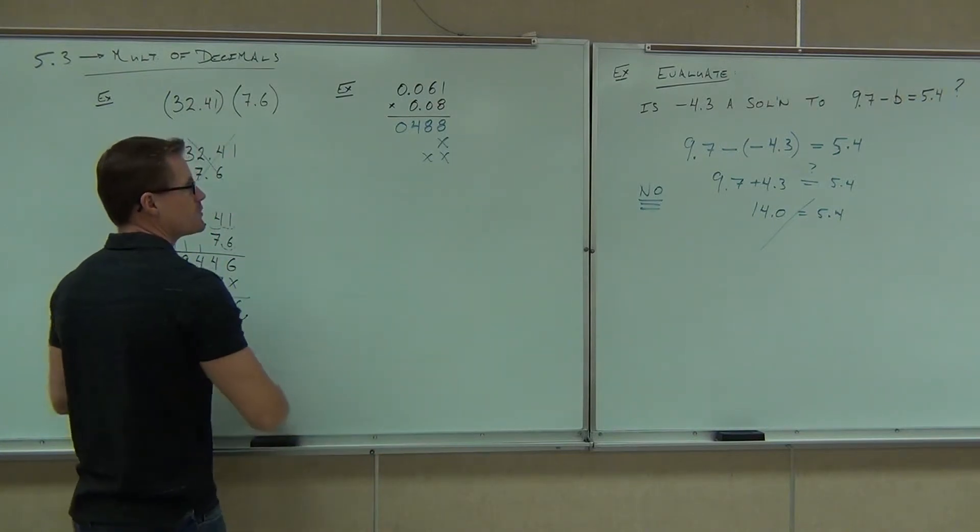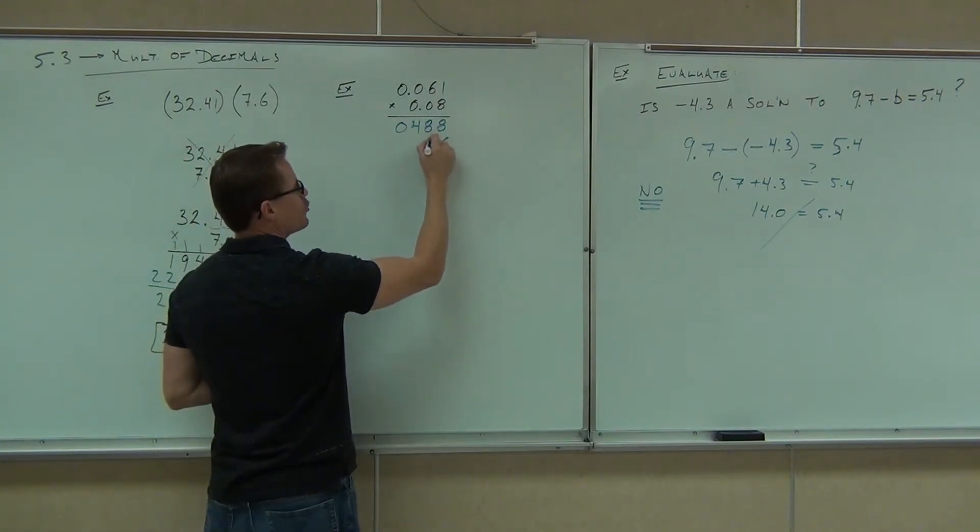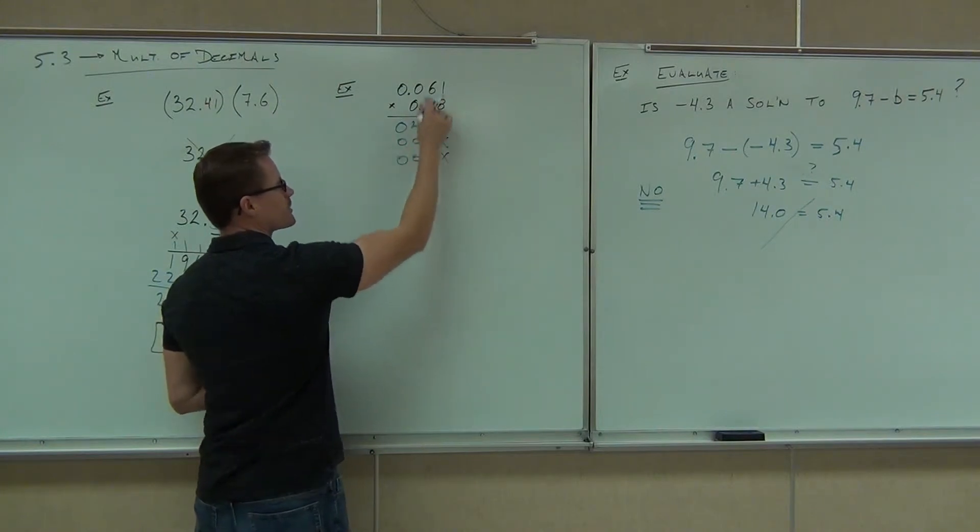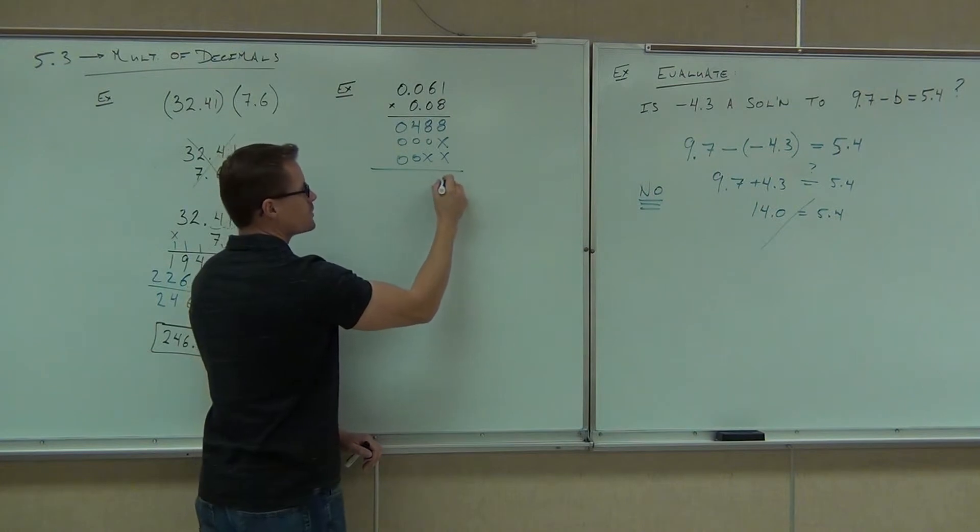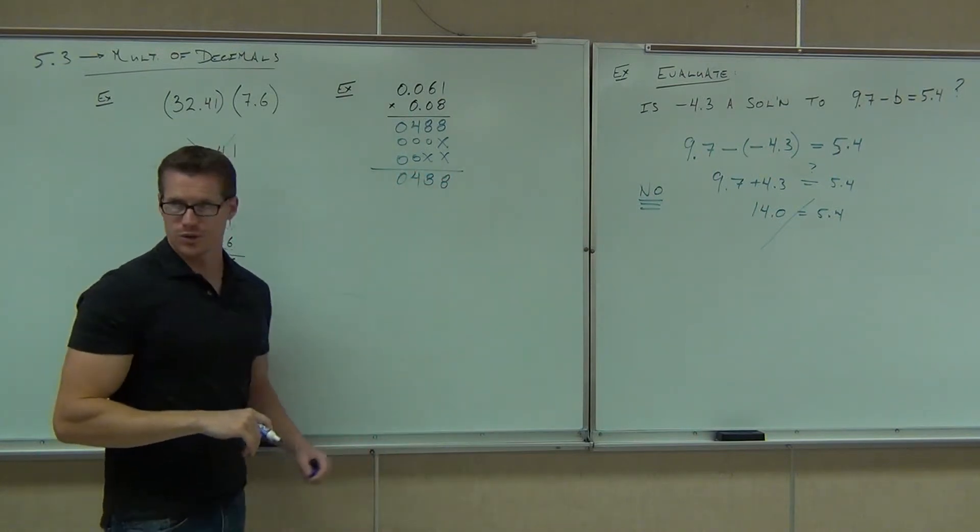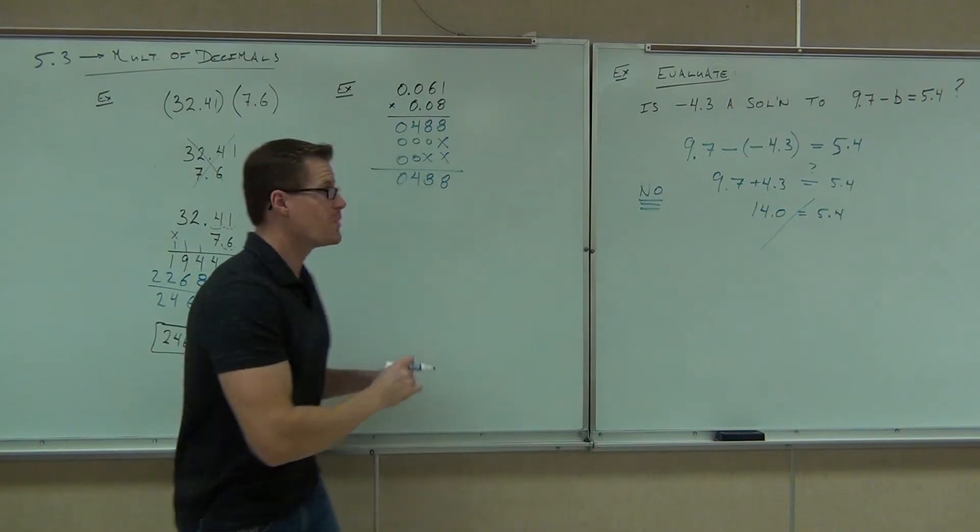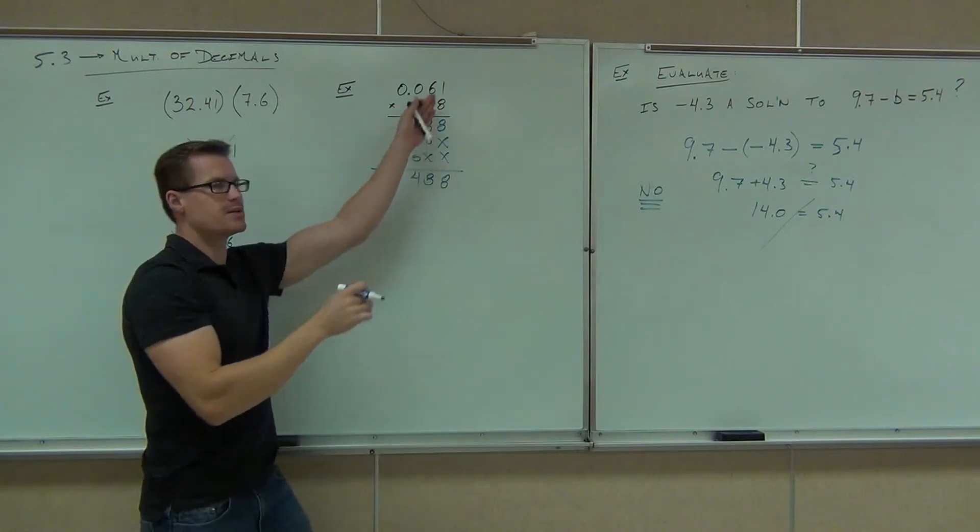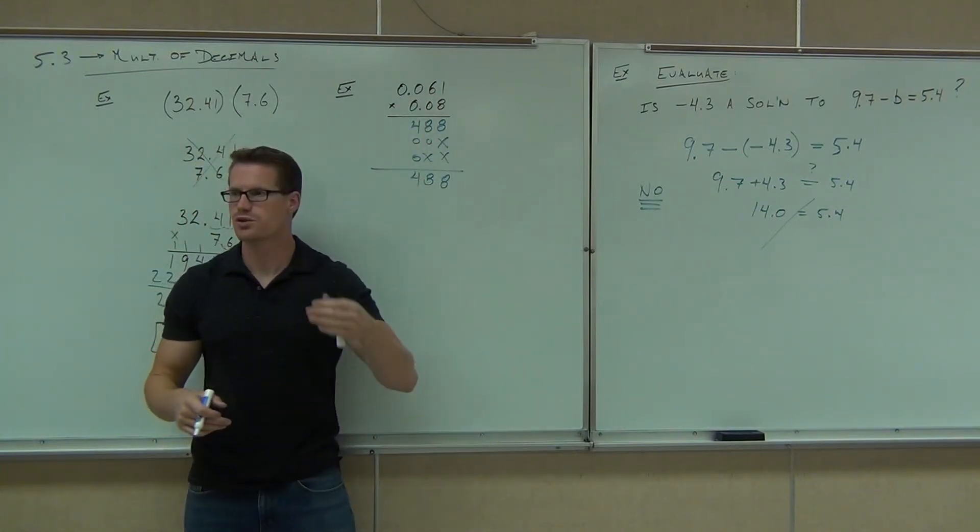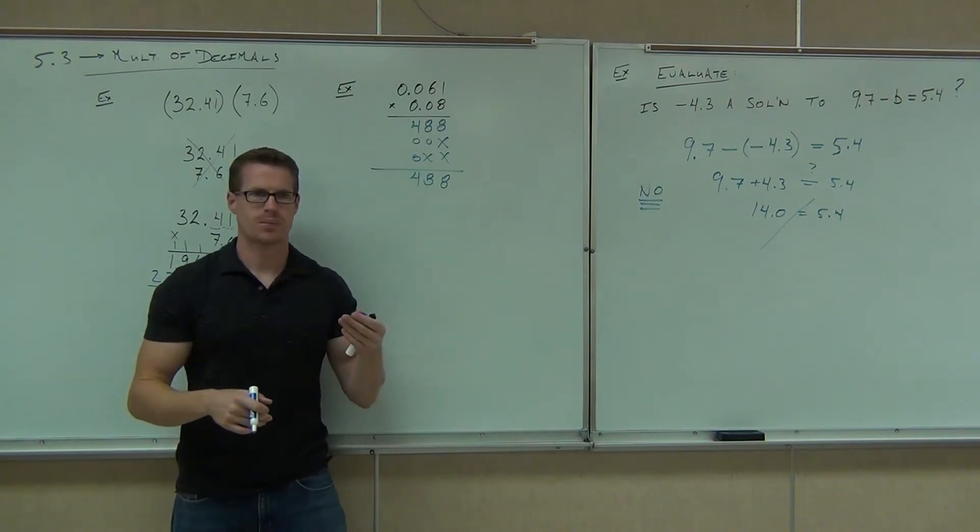As long as you know what to do with the number place value. So for instance, if you got all these, you would get just a whole bunch of 0s. True? Because you have 0 times the number, it's going to give you 0. If you add them up, you're still only going to get 8, 8, 4, and a 0. Are you with me, folks?